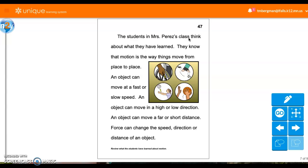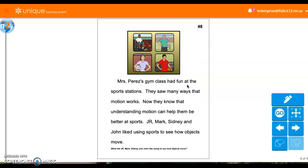The students in Mrs. Perez's class think about what they have learned. They know that motion is the way things move from place to place. An object can move at a fast or slow speed. An object can move in a high or low direction. An object can move far or a short distance. And force can change the speed, direction, or distance of an object. Mrs. Perez's gym class had fun at the sports stations. They saw many ways that motion works. Now they know that understanding motion can help them be better at sports. So what did J.R., Mark, Sidney, and John like using to see how objects move?